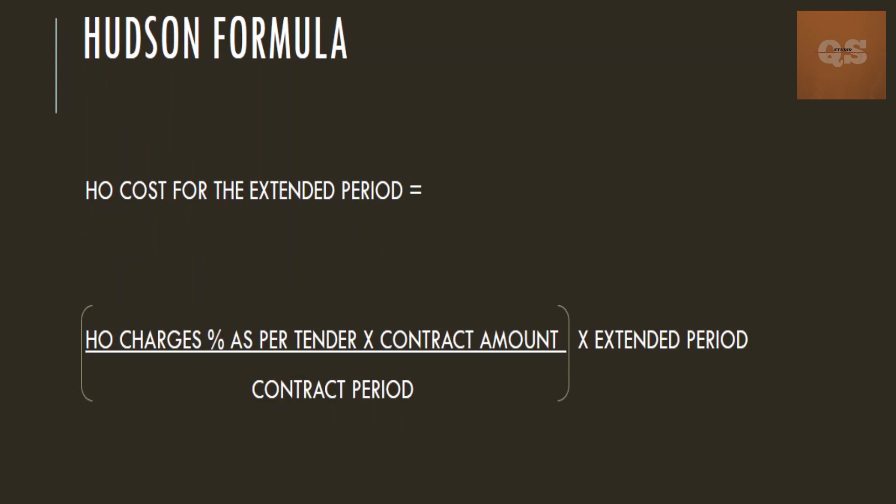Hudson formula. This formula can be used once a percentage has been specified in your tender document and has been mentioned in your contract. Using that percentage, you can calculate your head office charges. This will be the percentage that you will be using while costing your entire project, and the same percentage can be used to calculate your head office charges for your extended period of time. Once the client or the engineer has extended your time and agreed that the percentage mentioned in the tender document should be used for calculating the head office cost of the extended period, then you can use this formula.